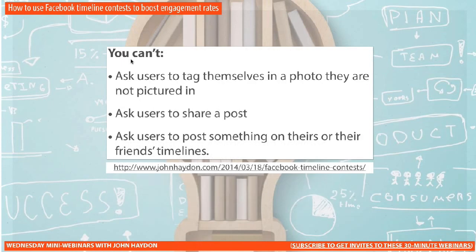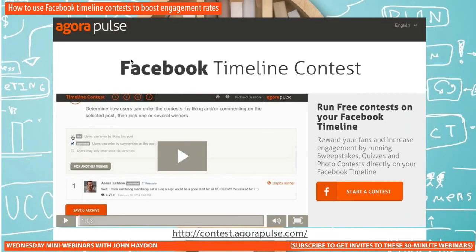What you can't do: you can't ask users to tag themselves in a photo they're not pictured in. You can't ask users to share a photo or share a post — sharing does not count. And you can't ask users to post something on a friend's timeline or on their own personal timeline. Agorapulse has a free tool that will help you stay organized and randomly select likes and comments, which helps you manage the Facebook timeline contest and select the winner.